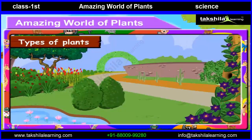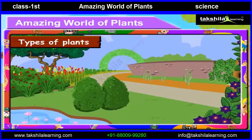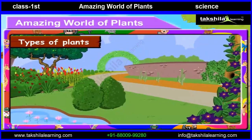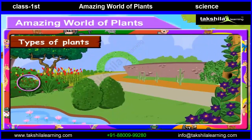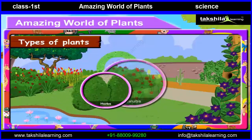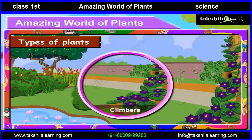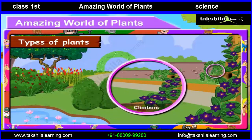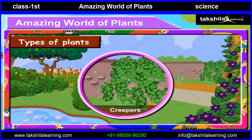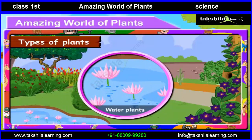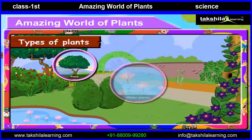Today we will study about types of plants. Look around yourself. You will see different kinds of plants like Shrubs, Herbs, Climbers, Creepers, Desert plants, Water plants, and Trees.